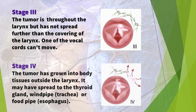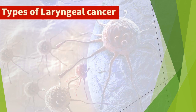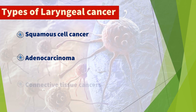The cancer has spread to other parts of the body, such as the lungs. Types of laryngeal cancer include squamous cell cancer — cancers that start in the skin-like tissue — adenocarcinoma — cancers that start in glandular tissue — and connective tissue cancers.